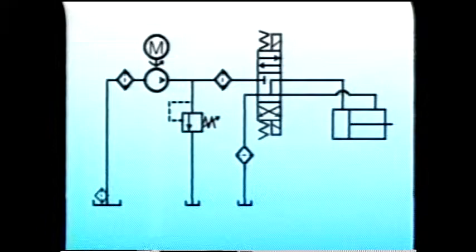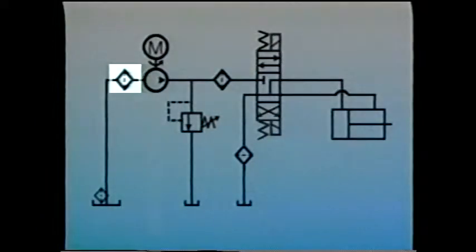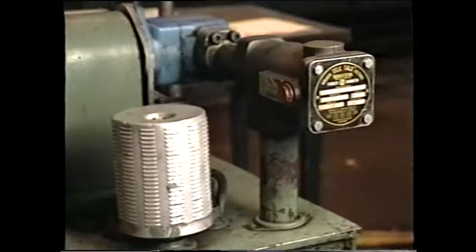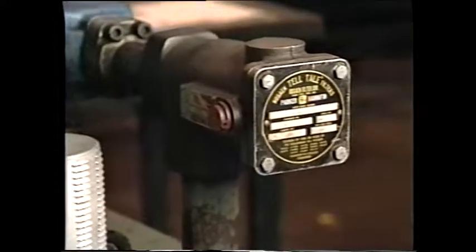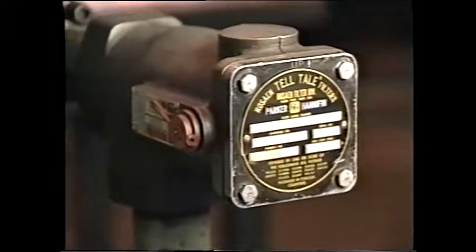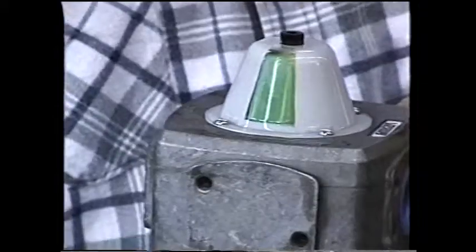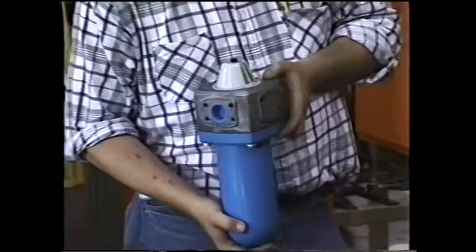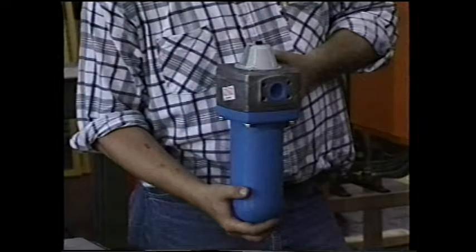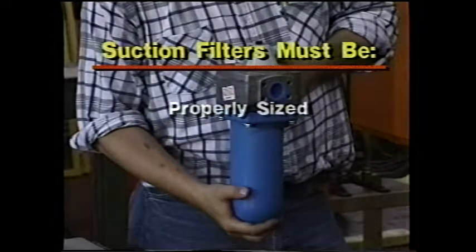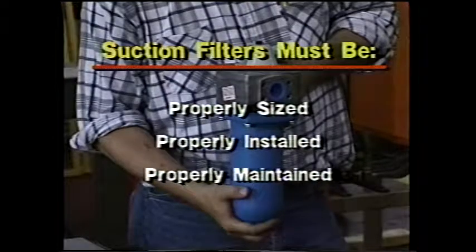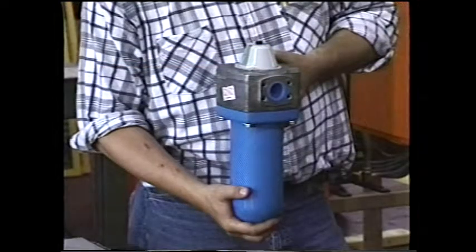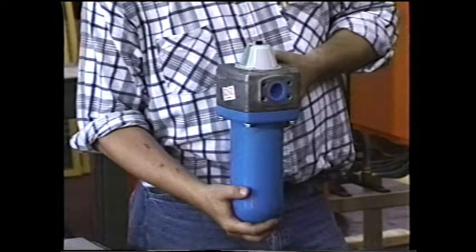Suction line filters, like sump strainers, are also placed on the suction side of the pump, but outside the reservoir in front of the pump. The filter has a replaceable element, which can be coarse or fine. Like the sump strainer, the suction filter protects the pump. However, since it's outside the reservoir, it's easy to clean or replace, and it can have an indicator to tell when the element is dirty. However, it too may starve the pump and cause cavitation if it's not sized, installed, and maintained properly. And like the sump strainer, it doesn't protect the system from contamination generated by the pump.